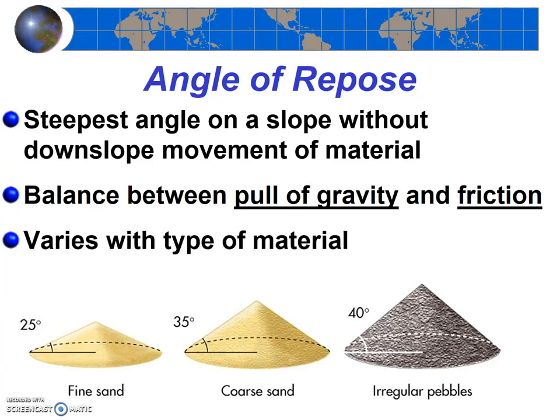Different materials have different angles of repose, as demonstrated by the diagram below from your textbook. You probably already knew this intuitively. It's hard to build a steep pile out of dry, fine sand, and it's easier to build a steep pile out of gravel. Easier still, get some large cobbles. Different materials and different sizes and shapes of materials all have different angles of repose. If the angle of repose is exceeded, a mass wasting event will result.